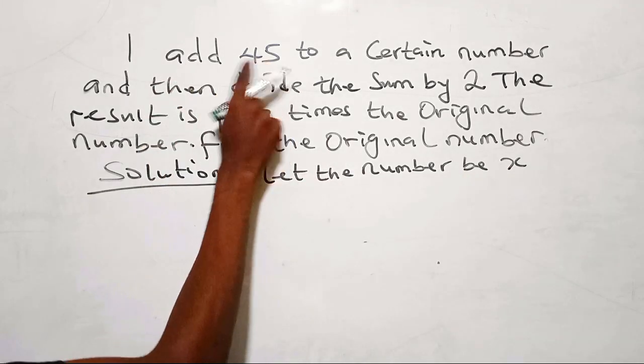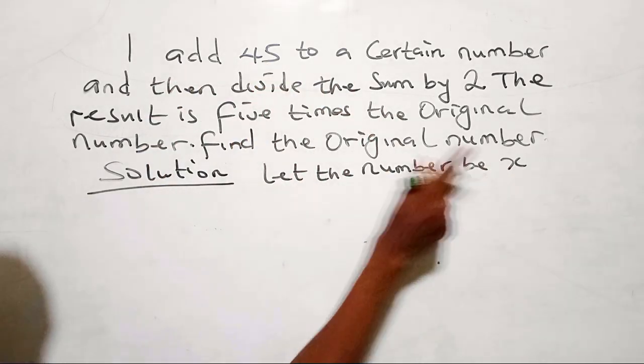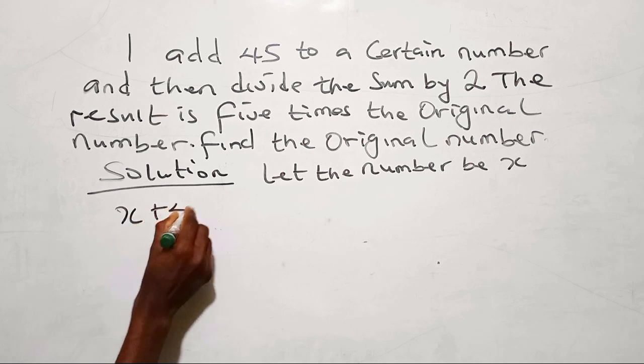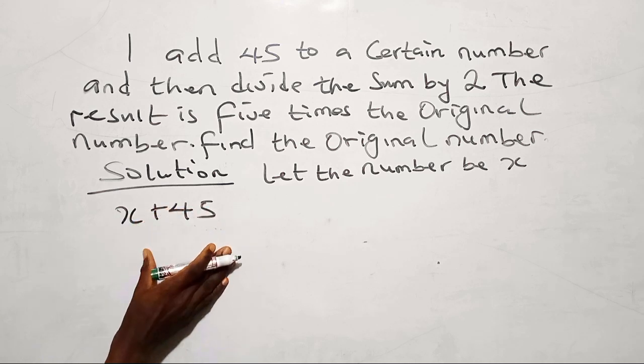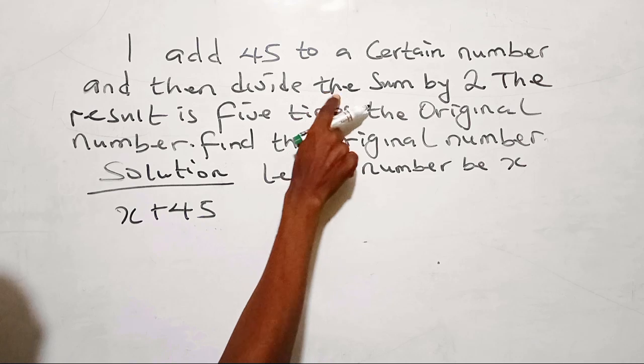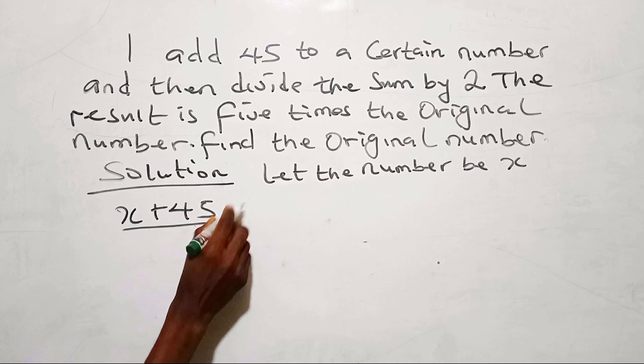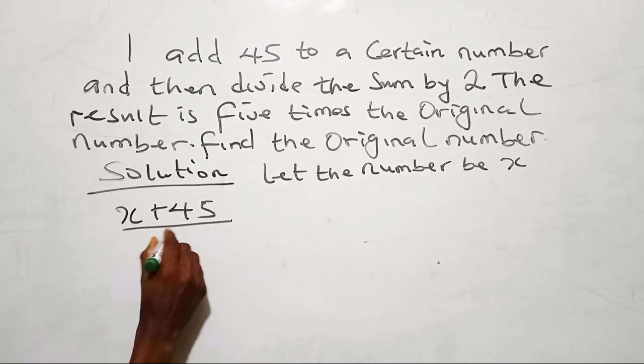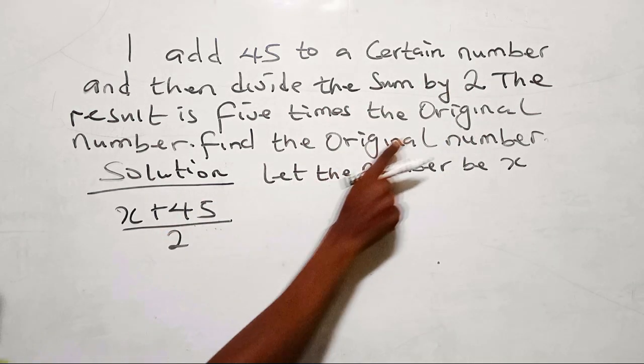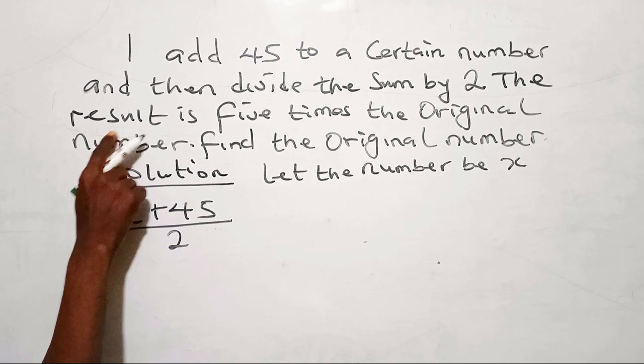Now, when I add 45 to this number, which is x plus 45, and then divide the sum. So the sum of x plus 45, I divide it by 2. The result...